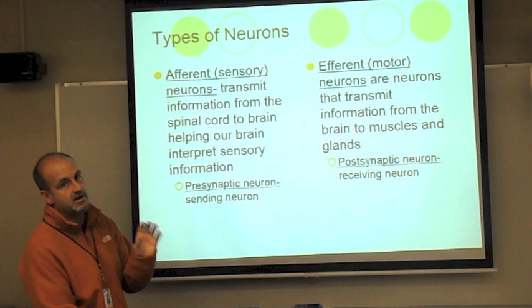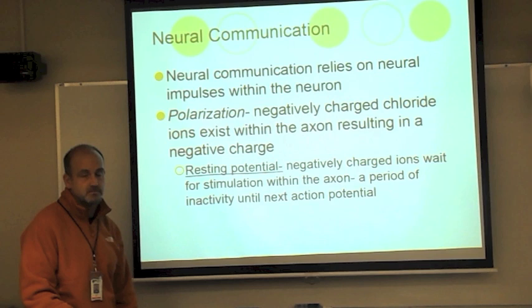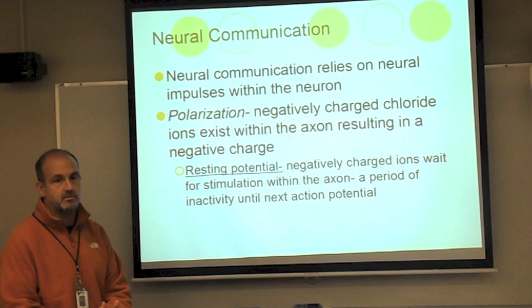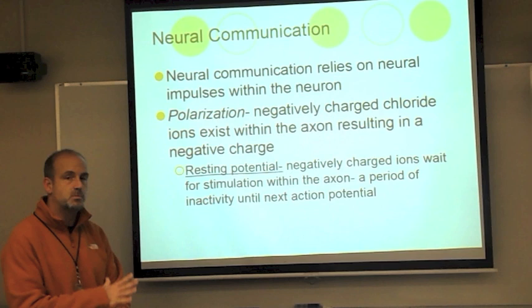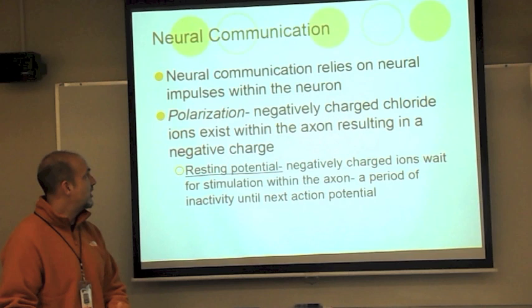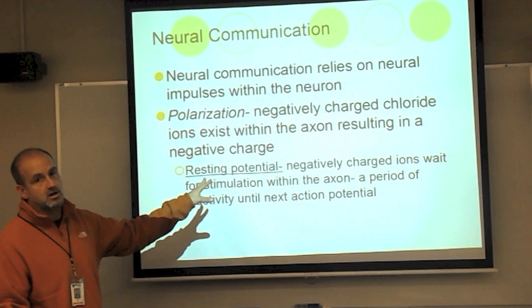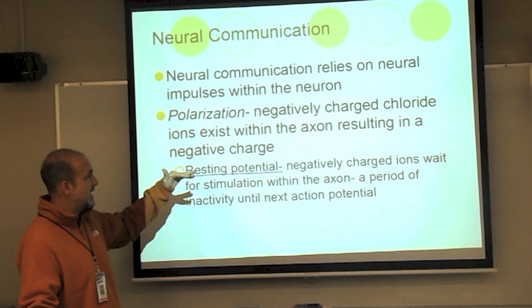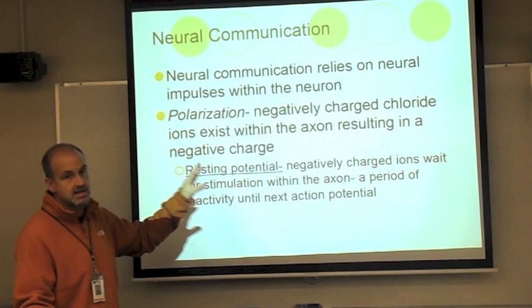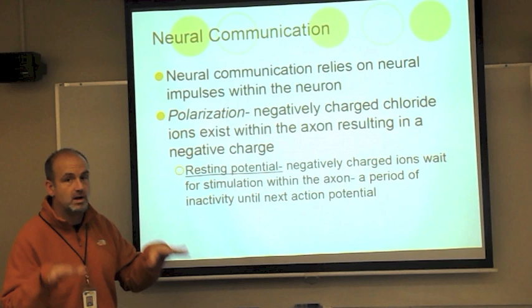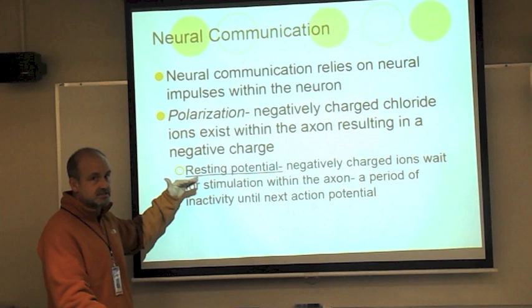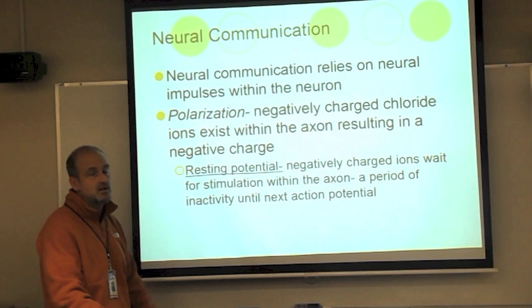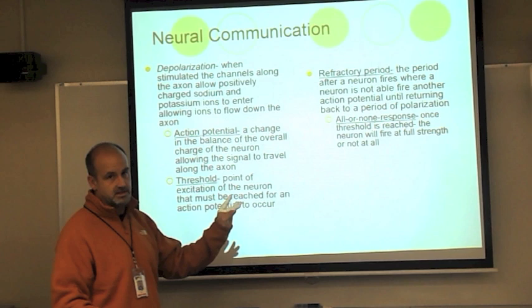Neural communication is the second part of this chapter. In order for the brain and body to communicate, messages must be sent from one neuron to the next — what causes a neurotransmitter to be released into the synapse. This relies on a neural impulse called an action potential. Every neuron is at a polarized charge — negatively charged on the inside within the axon. This is called the resting potential: negatively charged ions waiting for stimulation. When a neuron is doing nothing, it's at a resting potential, a state of polarization.